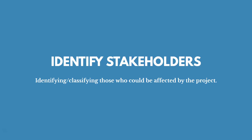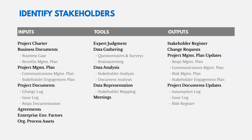Identifying stakeholders means identifying and classifying those who could be affected by the project. The inputs include the project charter, which may identify some stakeholders, as well as business documentation like a business case and a benefits management plan. Those may include information about our stakeholders. In the project management plan, you'll see a communications management plan and a stakeholder engagement plan. We can also have project documents and agreements like contracts or statements of work that could include stakeholder details.